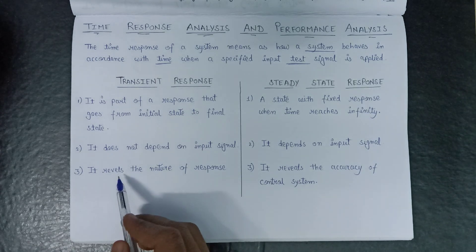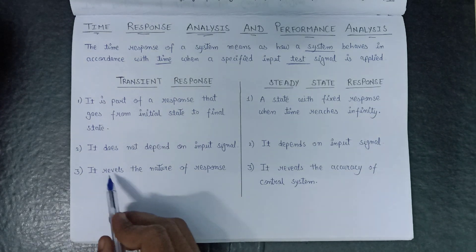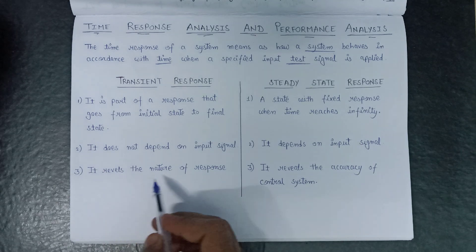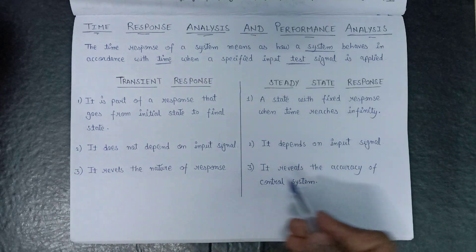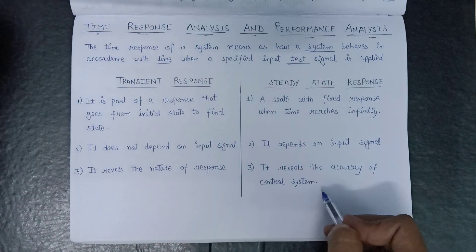Moving on to the third point, transient response always reveals the nature of response, while steady state response reveals the accuracy of a control system.